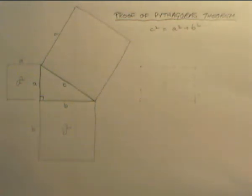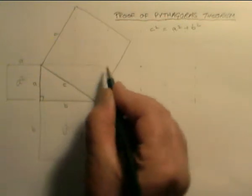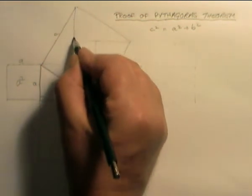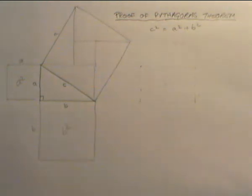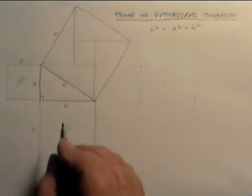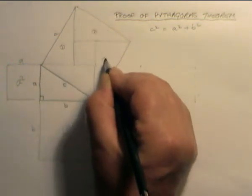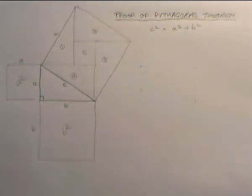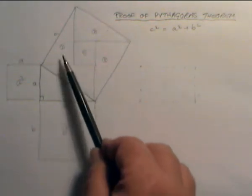I'm now going to prove this geometrically. Inside this square I can draw four identical triangles — and there they are. These four triangles are absolutely identical to the original triangle, and I've got a square left over in the middle. I'm going to call these triangles one, two, three, and four, and I'm going to call this middle square S.